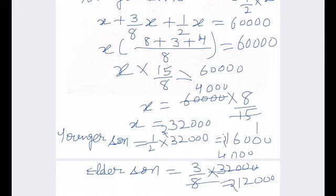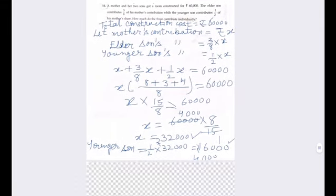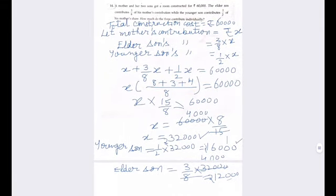So, 32,000 given by mother, 16,000 given by younger son and 12,000 given by the elder son. So, this is how they have contributed towards the construction.